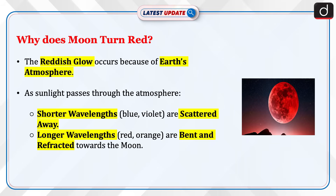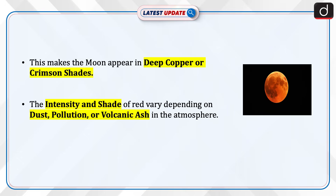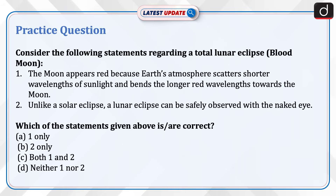Now let's discuss why the Moon turns red. The reddish glow occurs because of Earth's atmosphere. As sunlight passes through the atmosphere, shorter wavelengths like blue and violet are scattered away. Longer wavelengths like red and orange are bent and refracted towards the Moon, making it appear in deep copper or crimson shades. The intensity and shade of red vary depending on dust, pollution, or volcanic ash in the atmosphere.